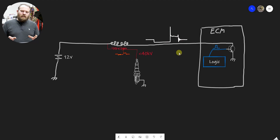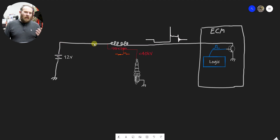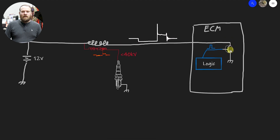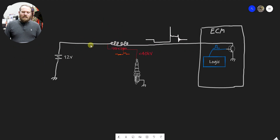Let's cover the traditional dumb coil first, where the transistor is built into the ECM. This could be a regular distributor-based system or a vehicle with coil-on-plug like the Ford modular engines or a lot of Chrysler products with a two-wire coil on top of the spark plug. We have battery voltage supplying our primary side, which then goes to the ECM transistor and gets turned to ground. The ECM processor controls that transistor, which controls the current flow through our ignition coil.